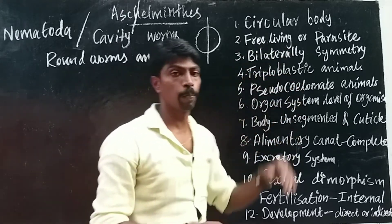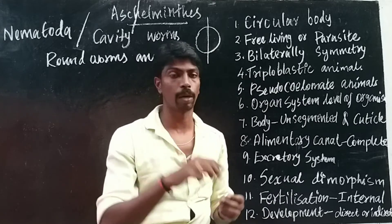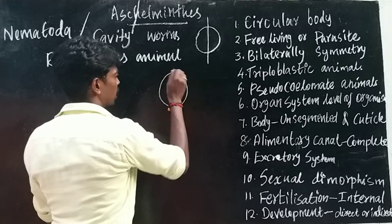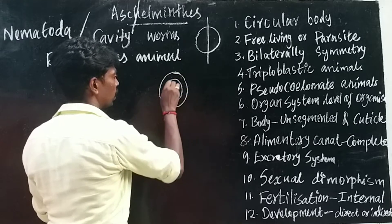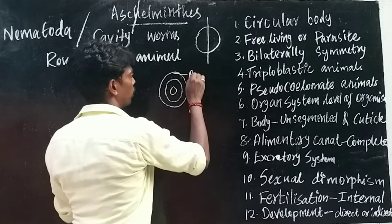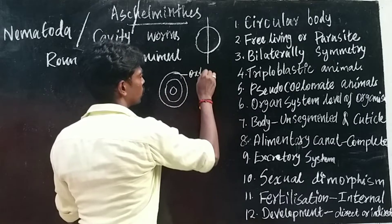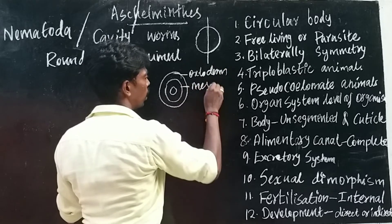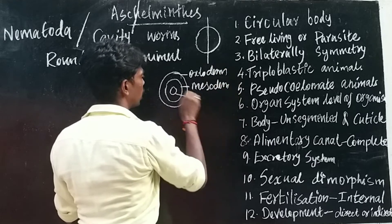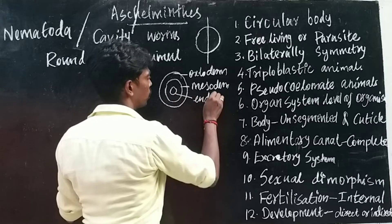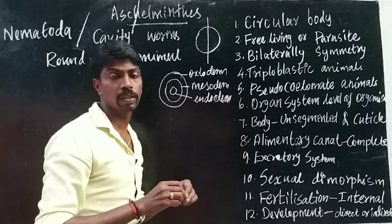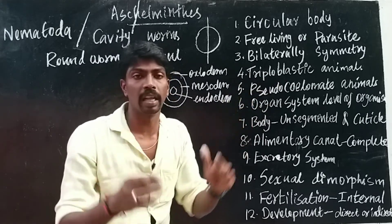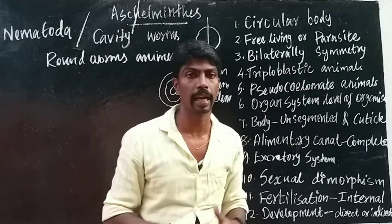These are also triploblastic animals. The body is covered by three germinal layers: the outer layer is the ectoderm, the middle layer is the mesoderm, and the inner layer is the endoderm. So that is why they are known as triploblastic animals.